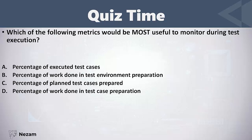Let's now solve some questions on this section. Which of the following metrics would be most useful to monitor during test execution? Options include: percentage of executed test cases, percentage of work done in test environment preparation, percentage of planned test cases prepared, and percentage of work done in test case preparation.